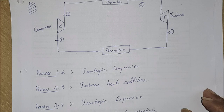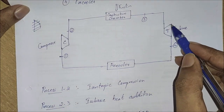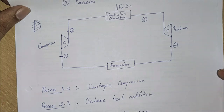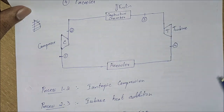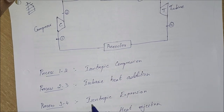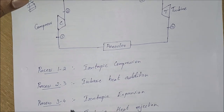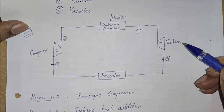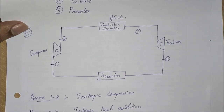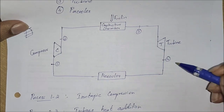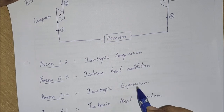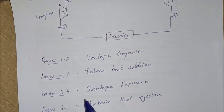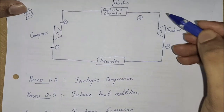Moving on to process three to four — in between we have a turbine. In the turbine, the gas gets expanded and we get the required work output. Process three to four is an isentropic expansion process, taking place at constant entropy.